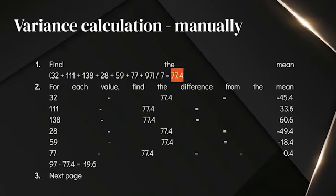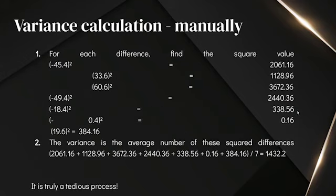Next, you need to find the difference from the mean of each element. So 32 is minus 45.4 from the mean, 111 is 33.6 from the mean, and so on. The third step: you need to square the differences that you just found out.